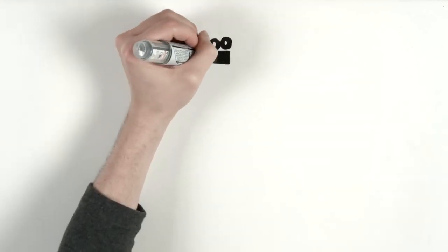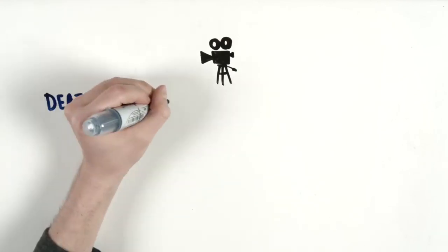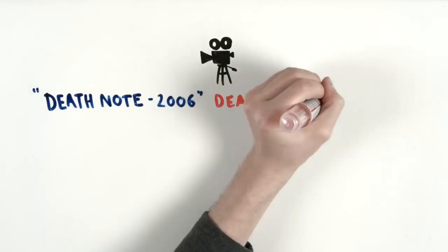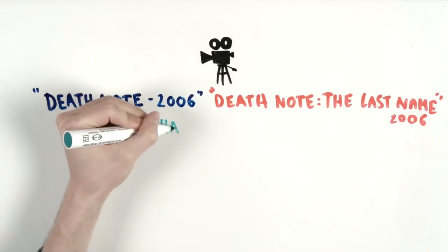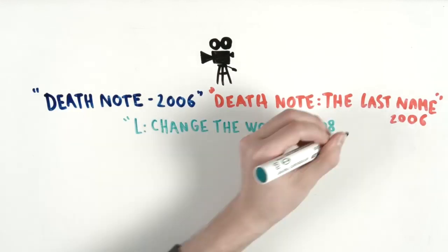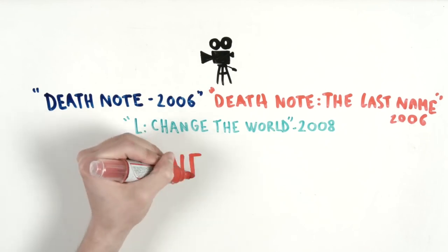Death Note was adapted into three movies. The first one is a 2006 film called Death Note. The second one is called Death Note: The Last Name. And the last one, L: Change the World, is a spin-off to the Death Note film series. In 2017,